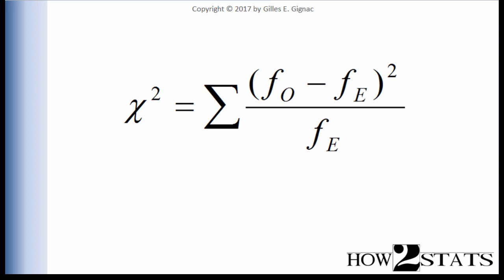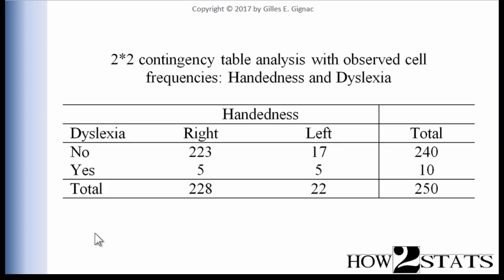So what does that look like in real terms? This is a table that represents the frequencies associated with the handedness and dyslexia data. There are four cells of key importance with respect to the 2x2. We have handedness — right and left — so you're either right-handed or left-handed, at least for this study.